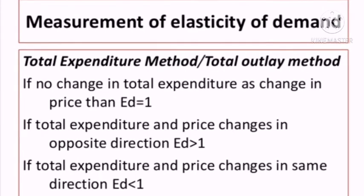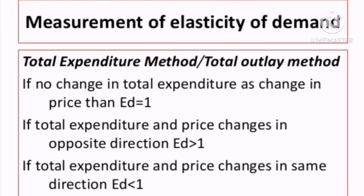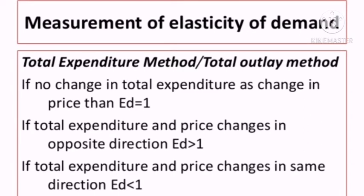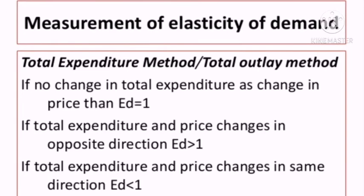Now let us look at the measurement of elasticity of demand — the Total Expenditure Method, also called the Total Outlay Method. If there is no change in total expenditure as price changes, then elasticity of demand (ED) is equal to 1. If total expenditure and price change in opposite directions, elasticity of demand is greater than 1.